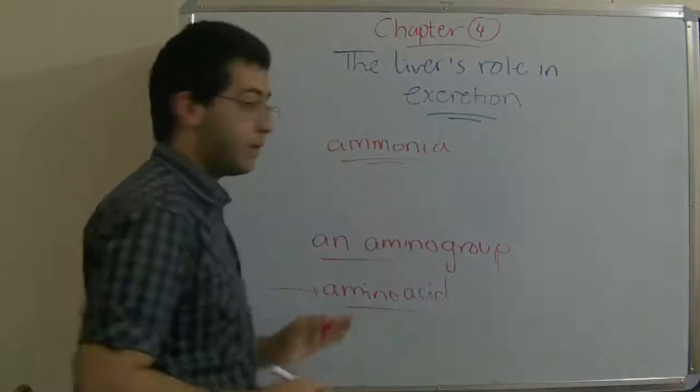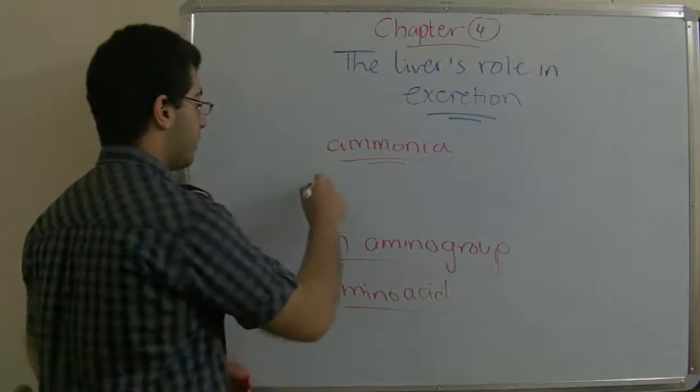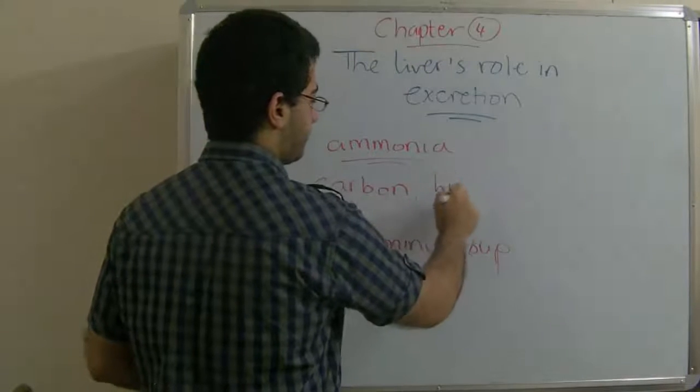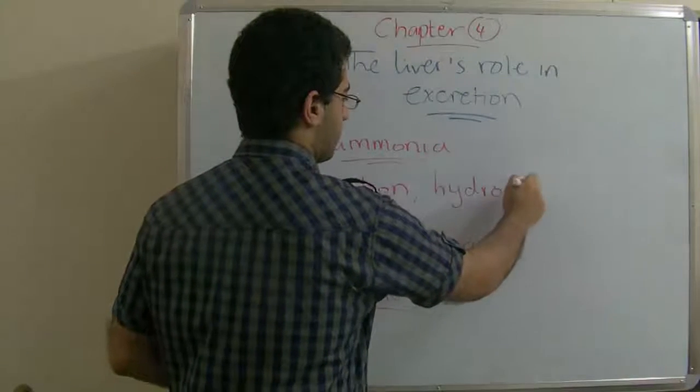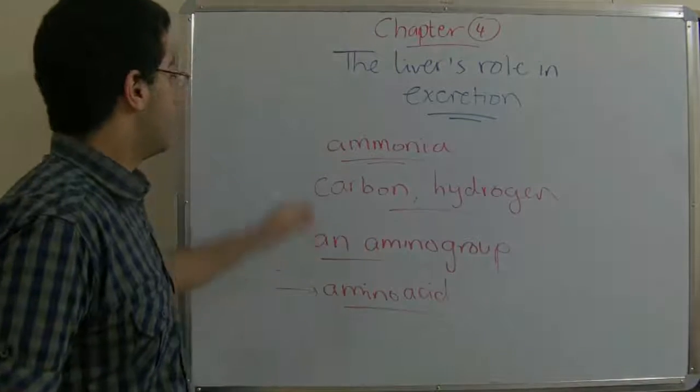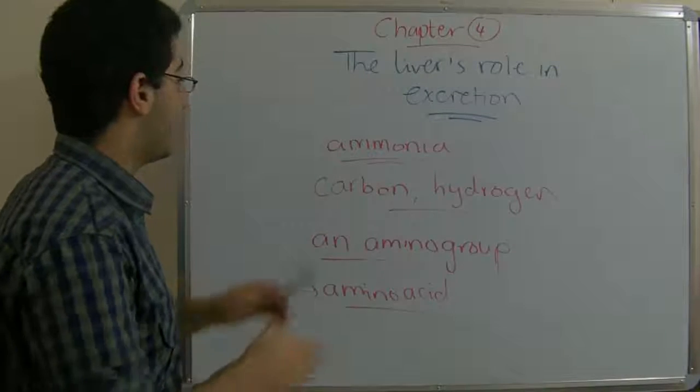And since the remaining part of the amino acid consists of carbon and hydrogen, they are oxidized in order to produce energy. This ammonia is poisonous and cannot stay in the body in this form.